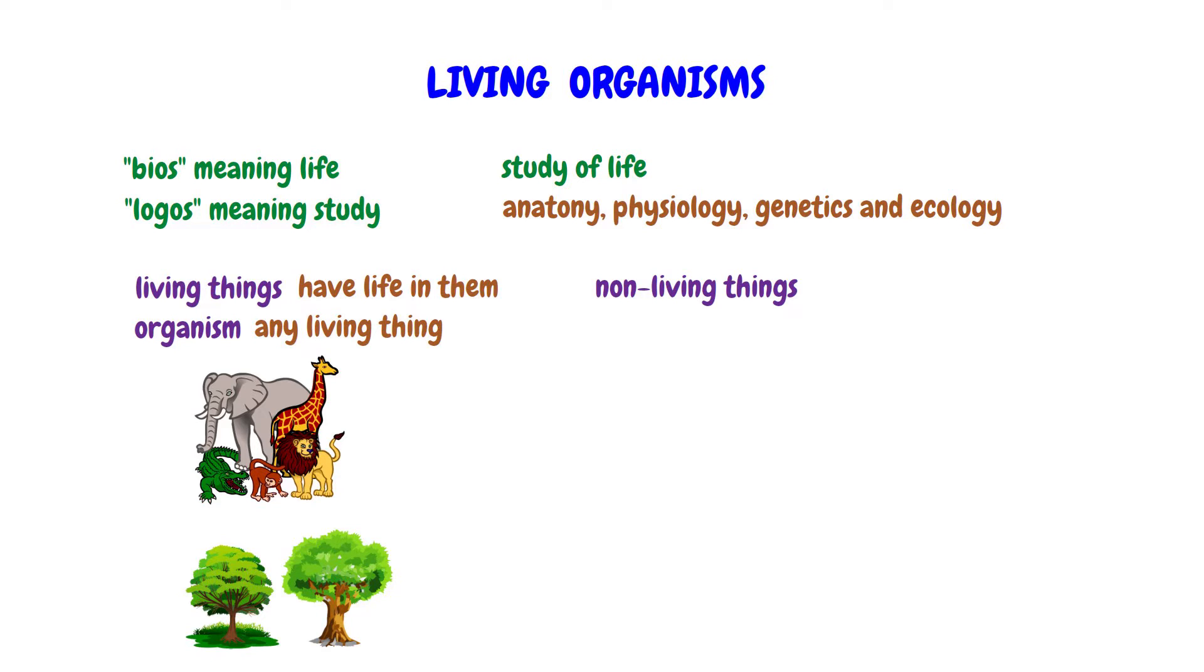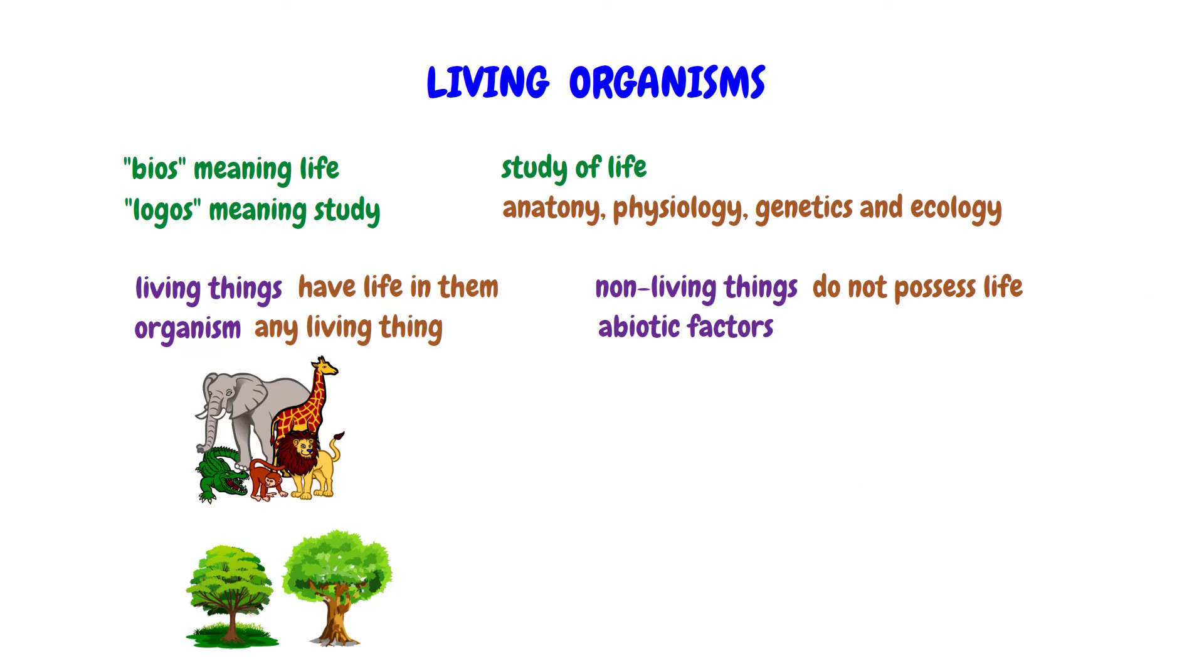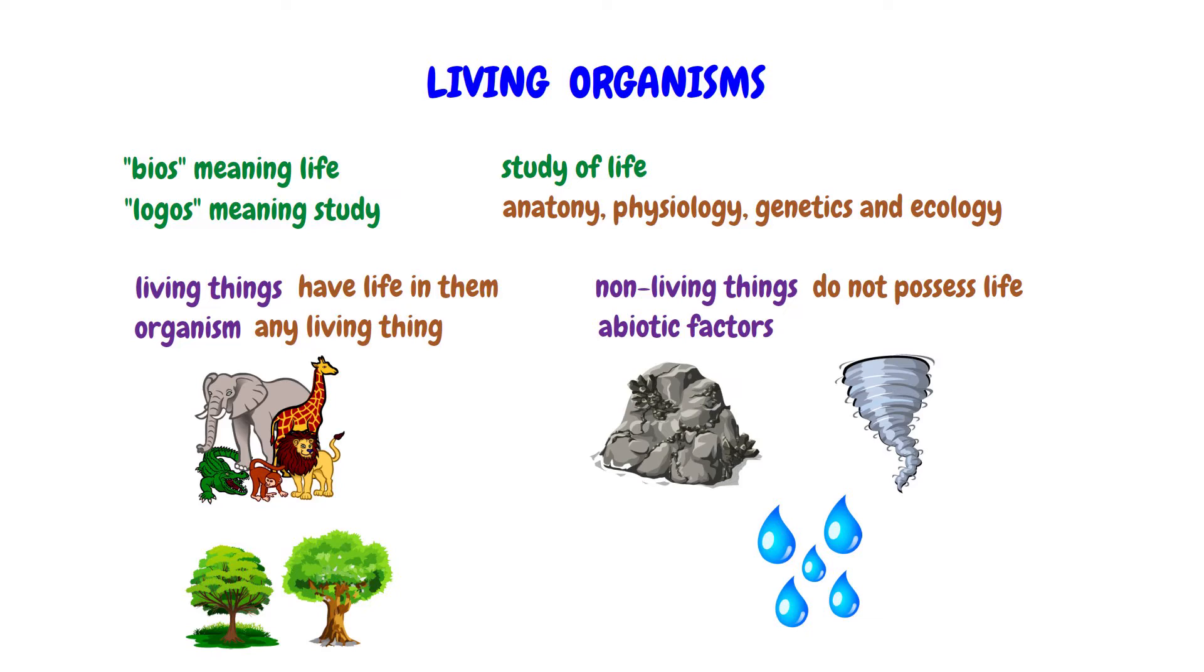Non-living things, also known as abiotic factors, do not possess life or biological processes. They include entities such as rocks, minerals, water, air, and natural phenomena like wind and fire. These elements lack the fundamental properties exhibited by living organisms, such as cellular structure, metabolism, and the ability to reproduce.